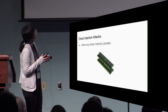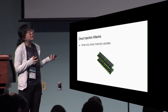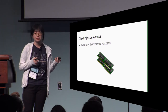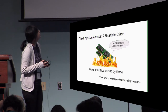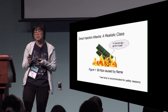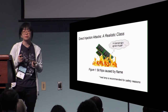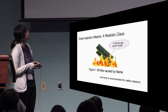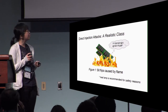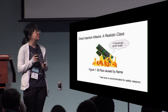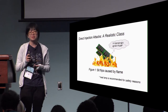So what are direct injection attacks? It's pretty simple. You can think of it as a write-only direct memory access, or directly overriding RAM. It's a class of attacks that includes some pretty realistic cases. For example, if this room were to catch fire spontaneously, your computer would probably have some bit flips which can be exploited, although heat lamps would be the safer option.